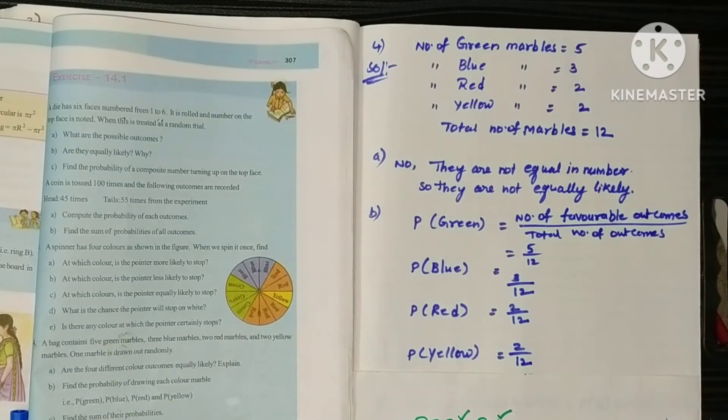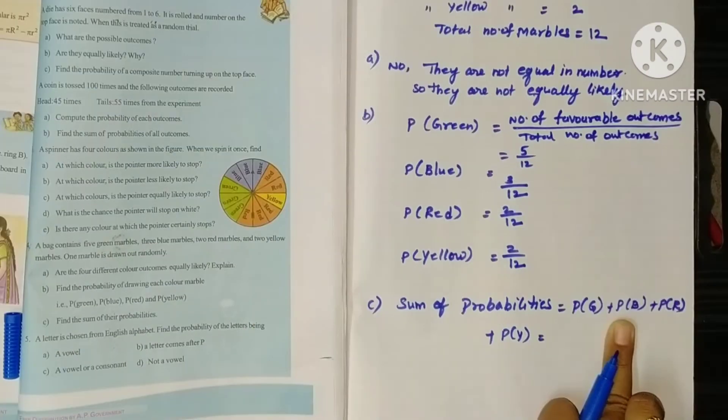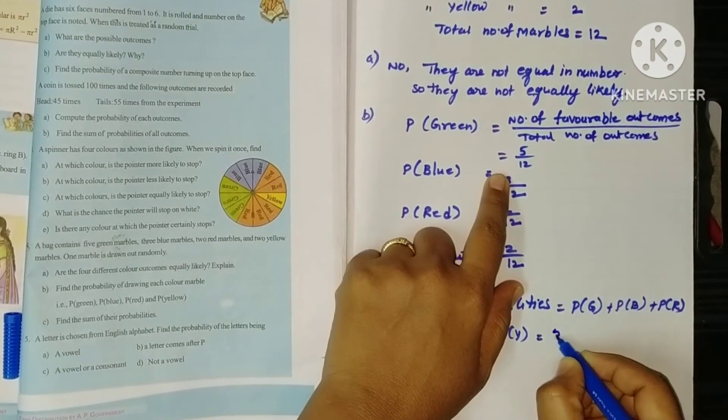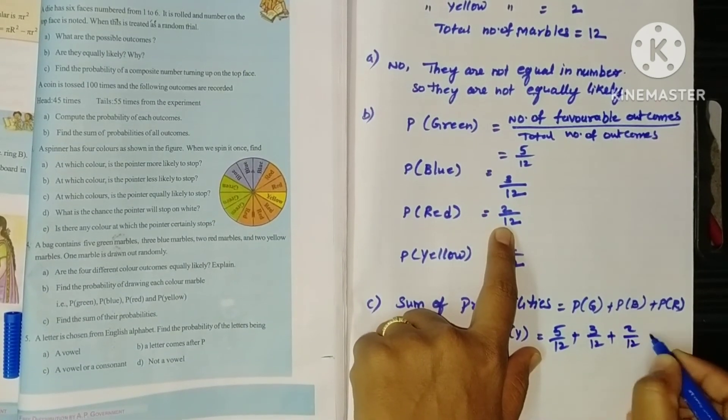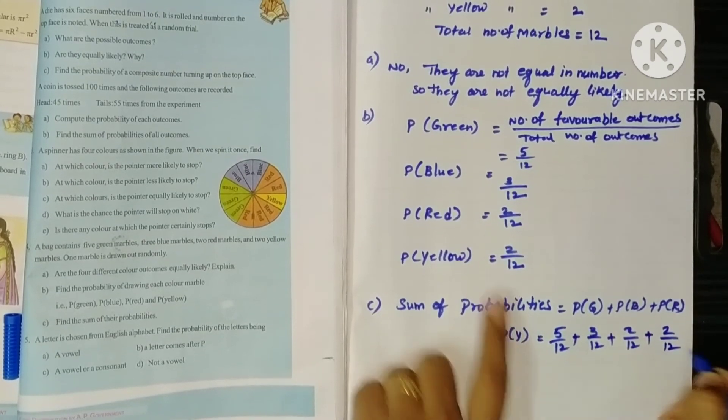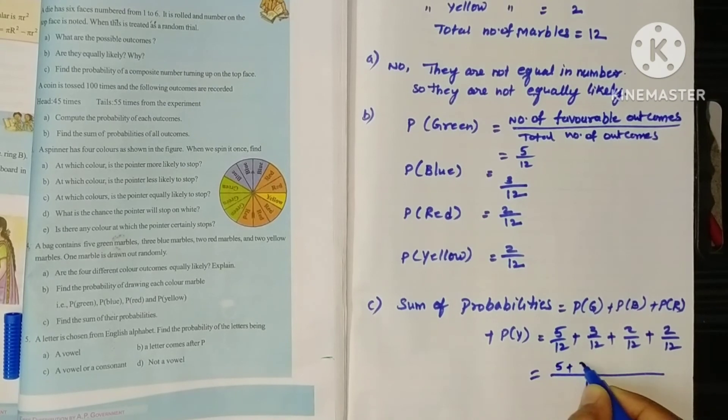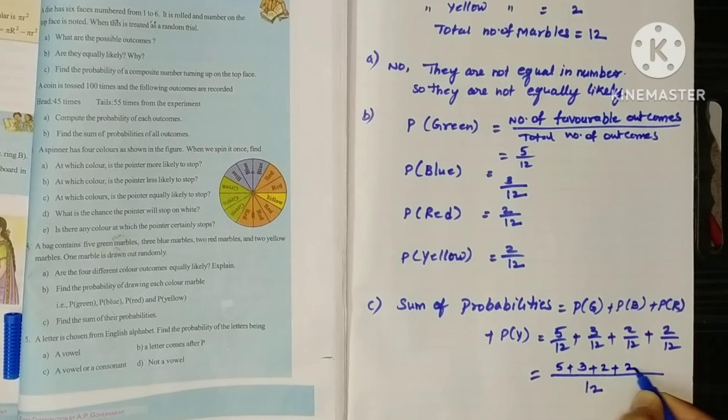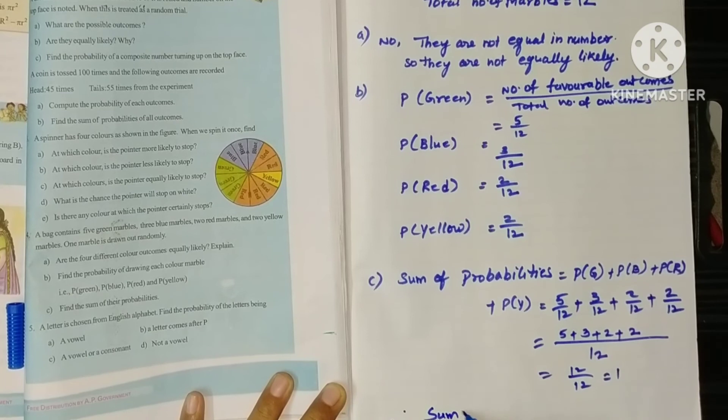Next, find the sum of their probabilities. Sum of probabilities: P of green plus P of blue plus P of red plus P of yellow. Green 5 by 12 plus blue 3 by 12 plus red 2 by 12 plus yellow 2 by 12. LCM 12. As we said in the introduction, sum of all probabilities is 1. So 5 plus 3 plus 2 plus 2: 12 by 12 equals 1. Sum of probabilities equals 1.